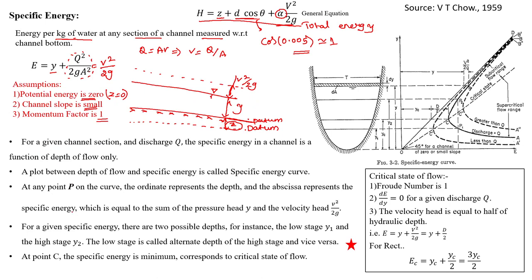There are a few important points. For a given channel section and discharge Q, the specific energy in the channel is a function of depth only. As you see here, it will be Q²/(2g·A²), where A = B·y. For example, for a rectangular channel, if B is constant, then specific energy depends only on y. The functional relationship can vary — it can be f(x)·xy or similar. Specific energy is a function of flow depth y.